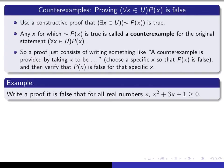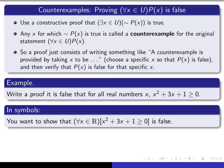Here's an example. Write a proof that it is false that for all real numbers x, x squared plus 3x plus 1 is greater than or equal to 0. Let's first write it in symbols. In symbols it says for every real number x, x squared plus 3x plus 1 greater than or equal to 0 is false. So all you have to do is prove that there exists a single x for which x squared plus 3x plus 1 is negative.